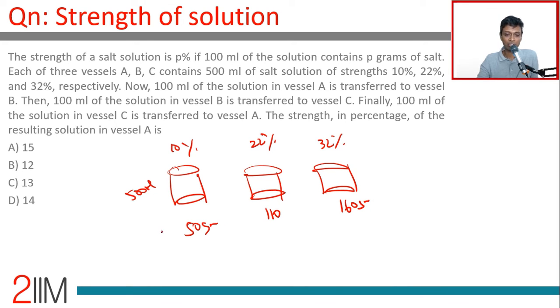Step by step: first we transfer from A to B, and so one-fifth is taken away. Now B will have 600 ml with 120 grams, which becomes a 20% solution.